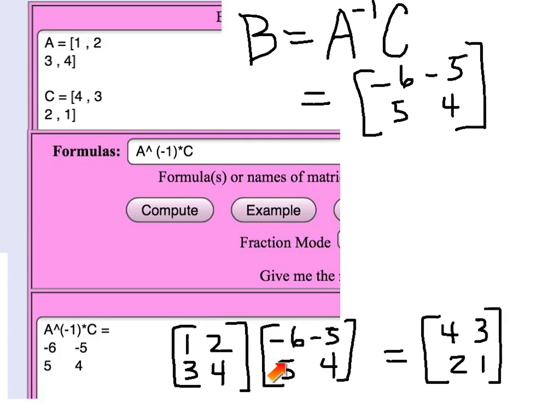First row times first column: 1 times minus 6 is minus 6 plus 2 times 5 is 10 is equal to 4. That checks. First row times second column: minus 5 plus 8 is 3. Second row of the left matrix times first column of the right matrix: 3 times minus 6 is minus 18 plus 20 is 2. And 3 times minus 5 is minus 15 plus 16 is 1.